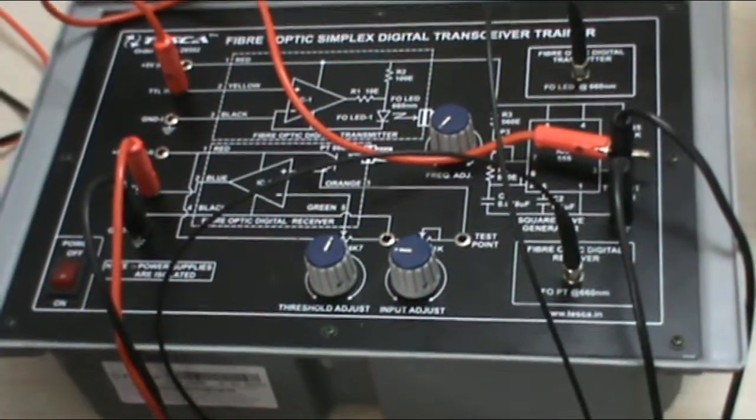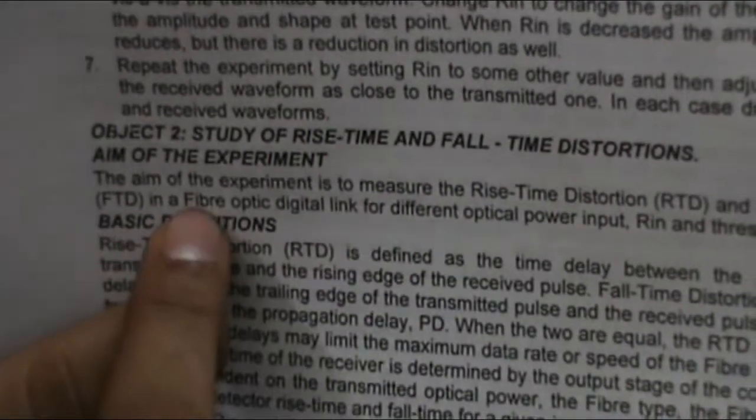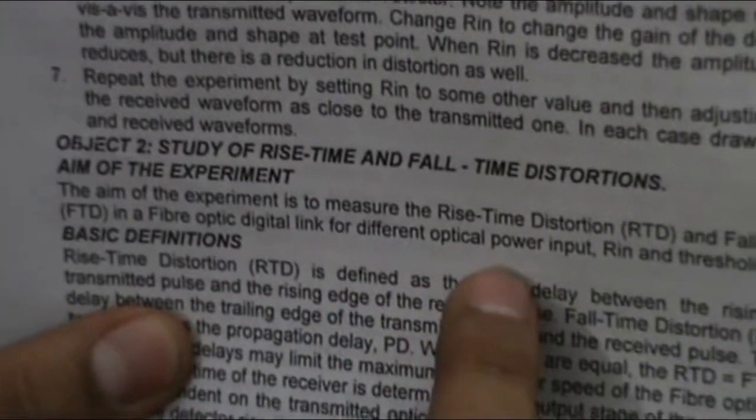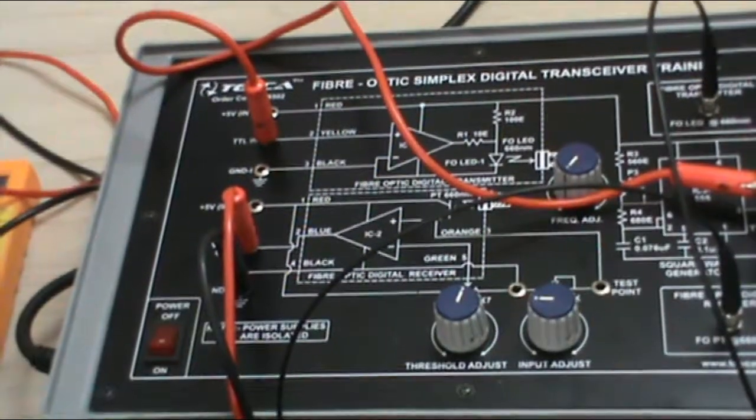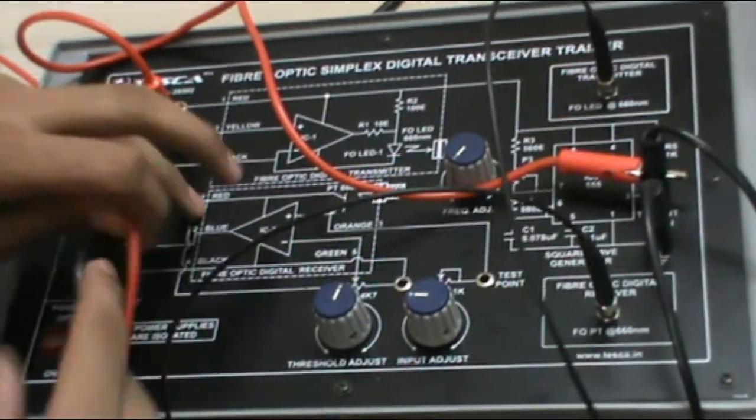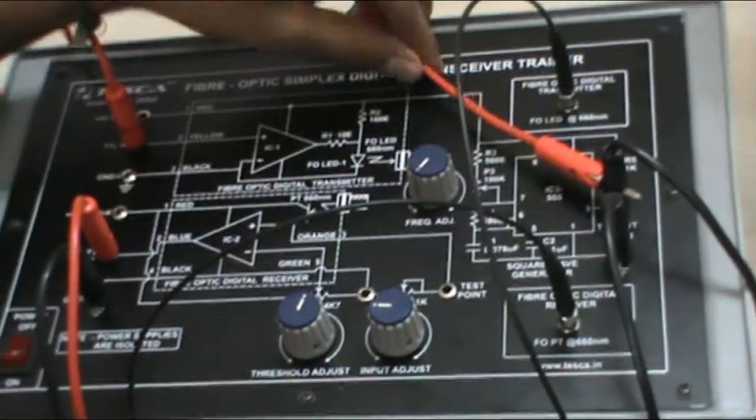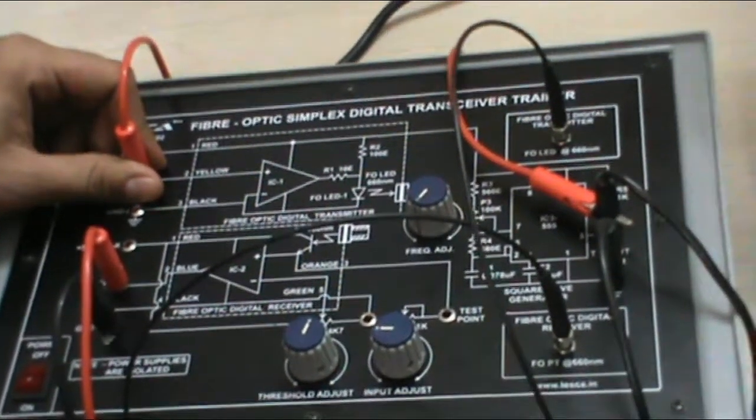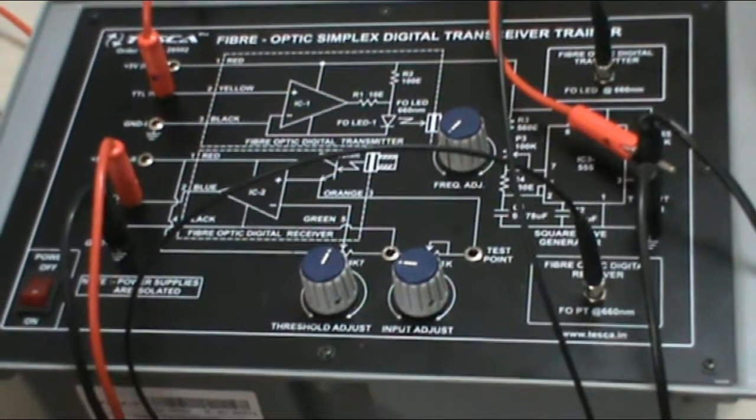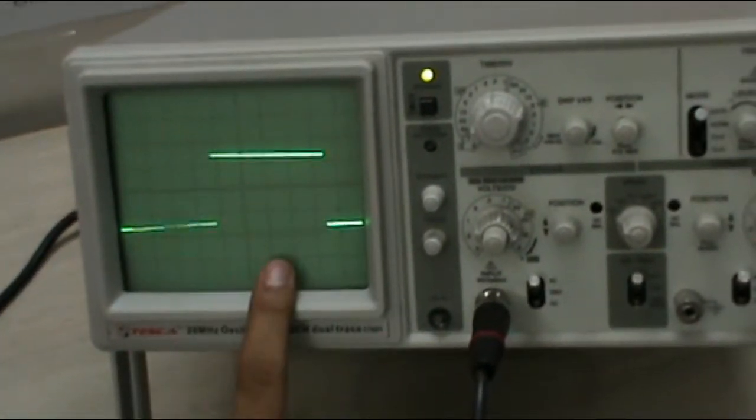For the second experiment, the object is to study of rise time and fall time distortions in our fiber optic digital link for digital optical power input, RN and threshold settings. Now the connections for the second experiment. The initial connections are totally same as we have seen in the first experiment. Connect the optical fiber link, connect TTL out to TTL in, and connect TTL out to CH1, and VO TTL out to CH2 as we have connected earlier. Set RN to 200 ohm. It is already set. We will observe a square wave at the CRO.